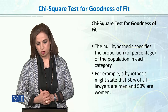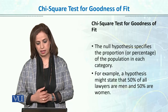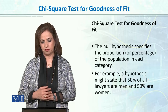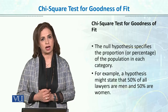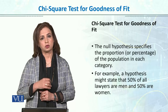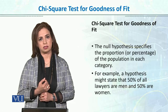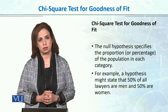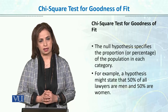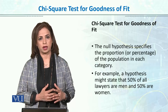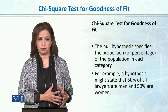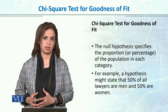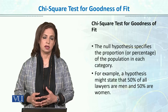For example, a hypothesis might state that 50% of all liars are men and 50% are women. In chi-square, there are two types of null hypotheses: one is called the 'no preference' hypothesis, and the other is called the 'no difference' hypothesis.